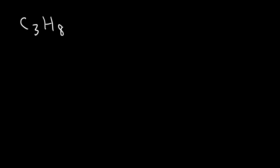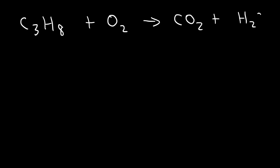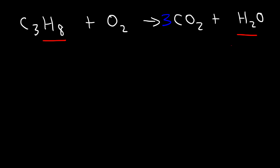Now let's look at another example: C₃H₈, propane, reacting with oxygen gas to produce carbon dioxide plus water. This is a combustion reaction — very exothermic, it generates a lot of heat. When dealing with combustion reactions, I prefer to balance the carbon atoms first. There are 3 carbon atoms on the left but only 1 on the right, so I put a 3 in front of CO₂. Next, I move on to hydrogen. I have 8 on the left and only 2 on the right, so I put a 4 in front of H₂O because 4 × 2 = 8.